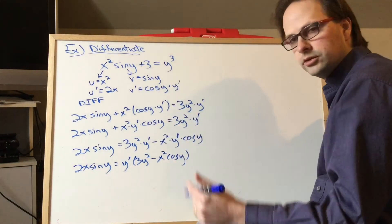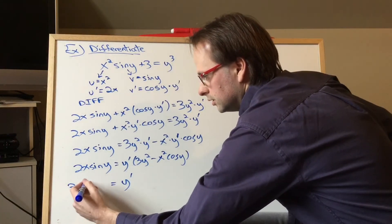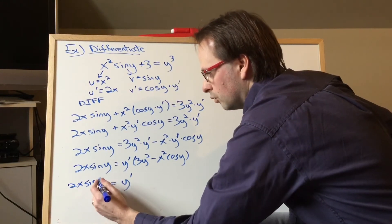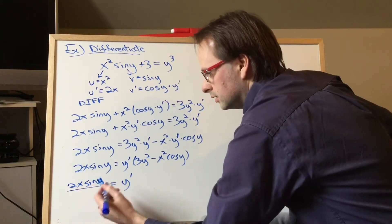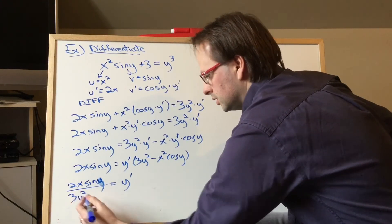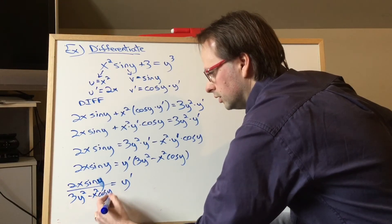And lastly, I'll just divide. So I'll get 2x sine, not x, but sine of y all over 3y squared minus x squared cos of y.